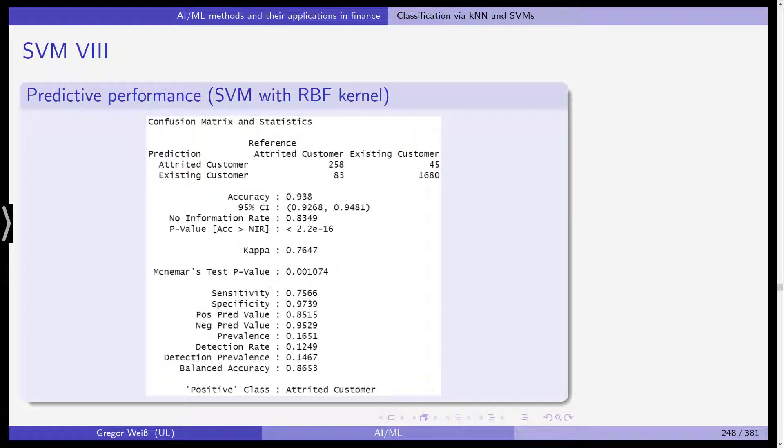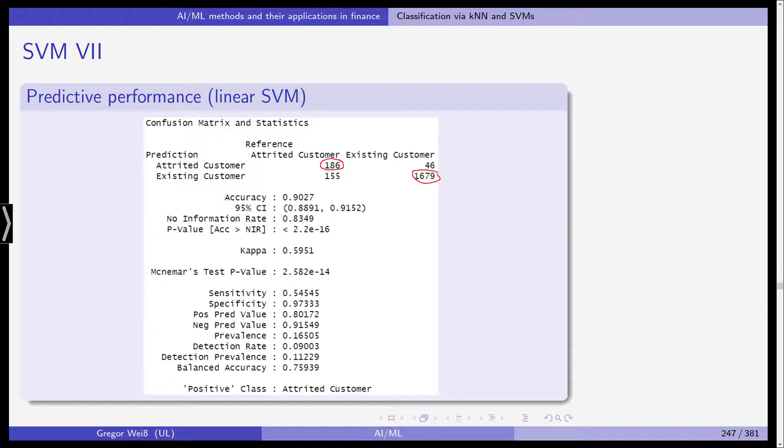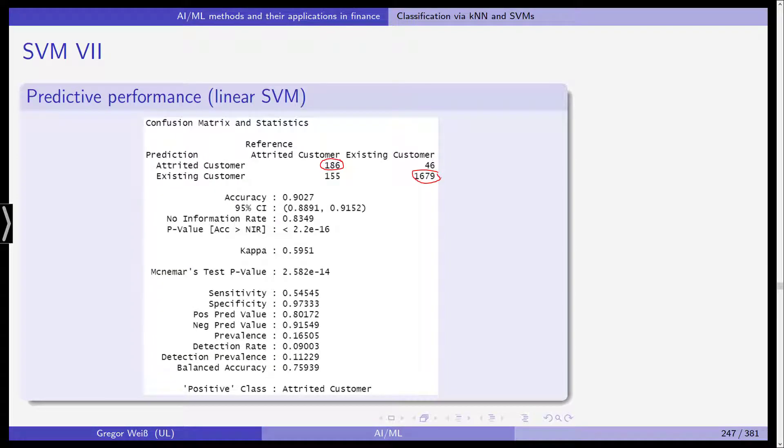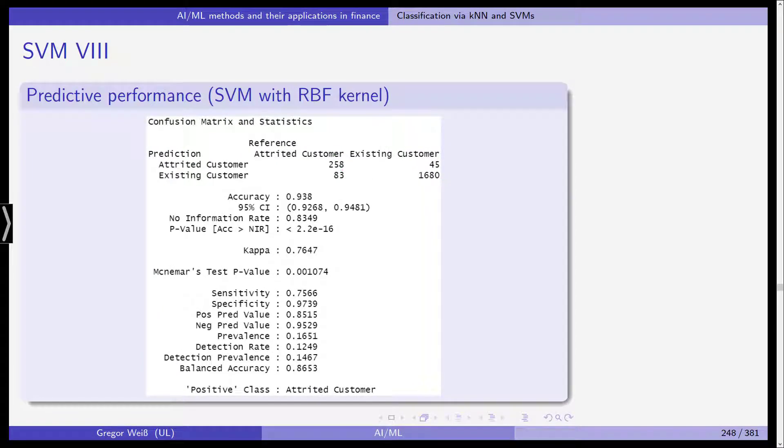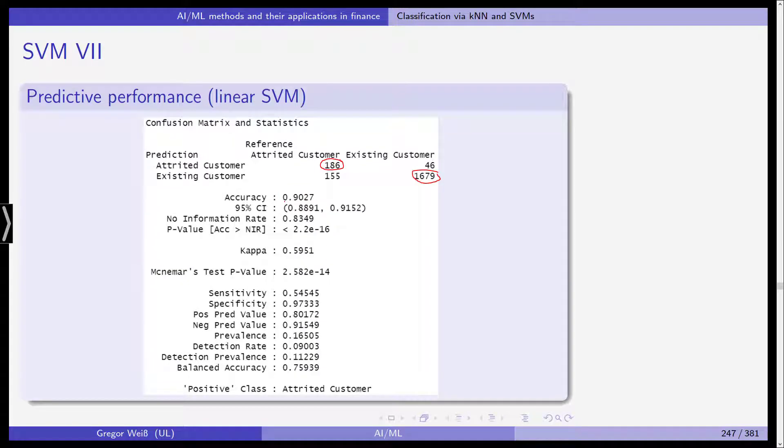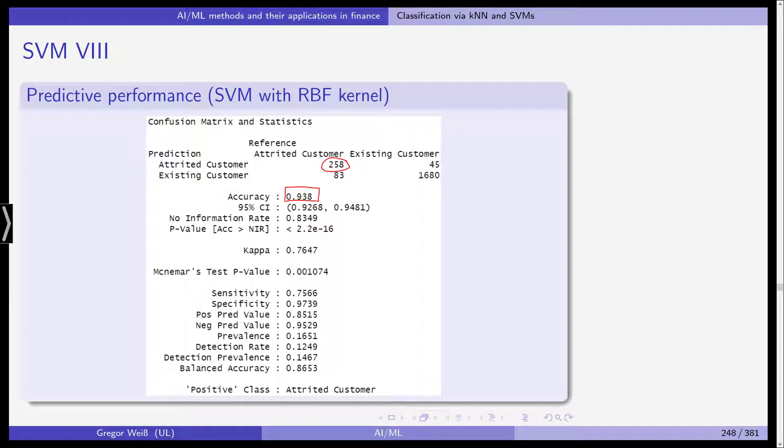For the radial basis function, you can see it is slightly better for existing customers, one observation, but it's hugely better for attrited customers. So as you can see also in the accuracy, it increases by almost 3% in contrast to the linear SVM. So the radial basis function kernel support vector machine actually does a much better job than the two competing models.